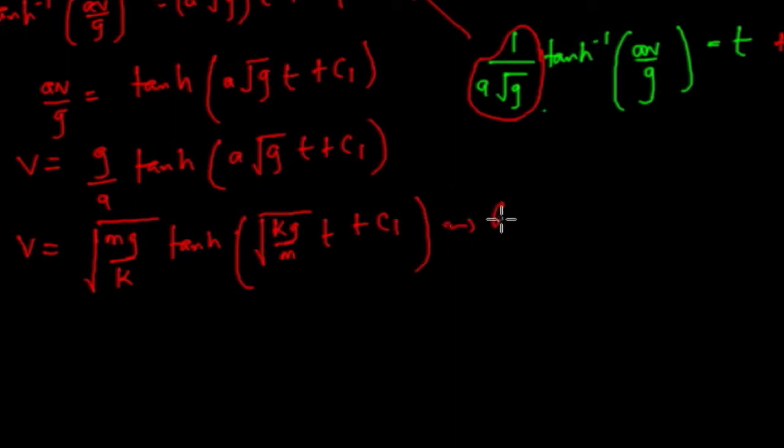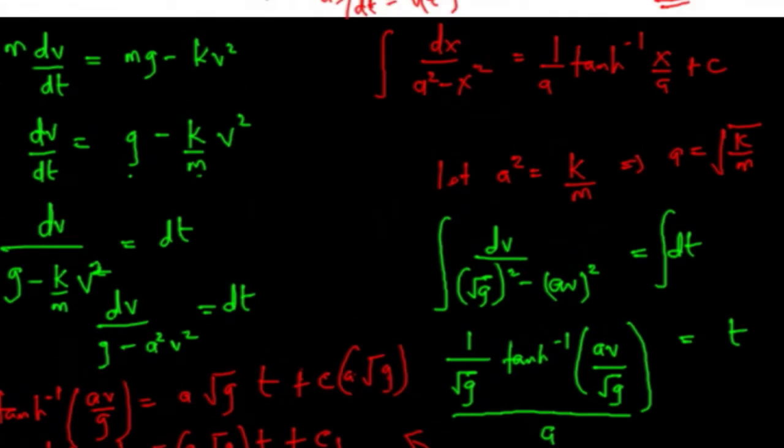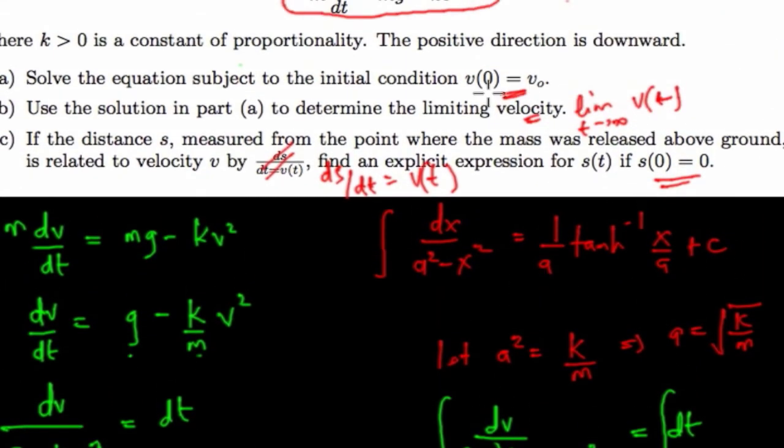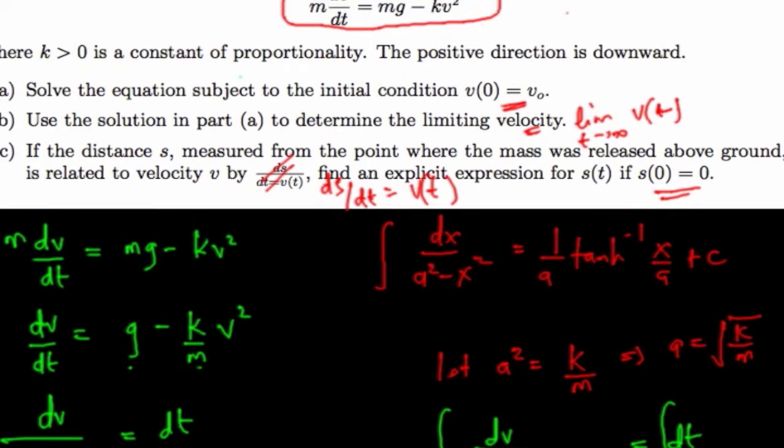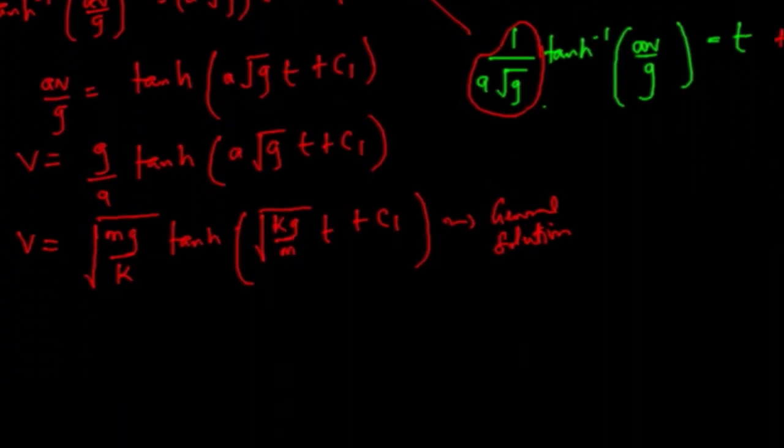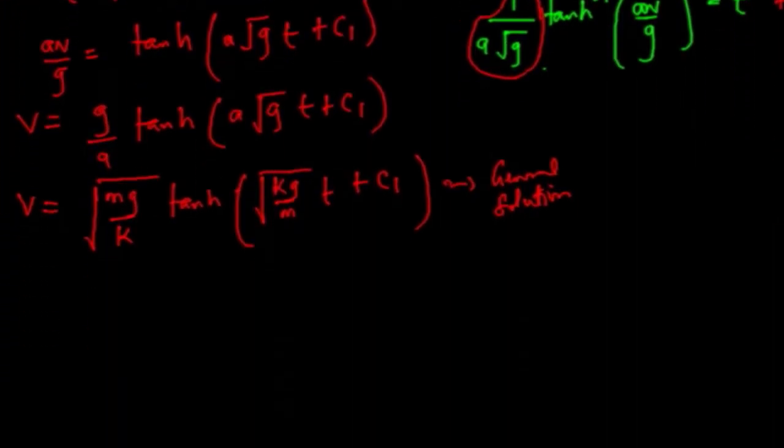So this is the general solution. But then we're told to use an initial condition. The initial condition says when t equals zero, v is v naught. So that we can find a particular solution.